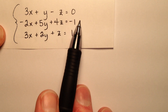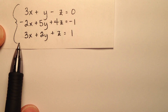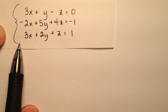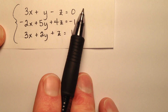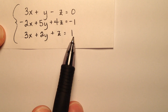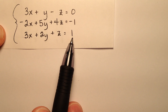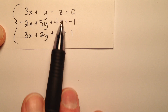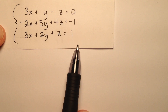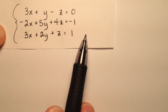Here I'm going to solve this system with three equations and three unknown values using Cramer's rule. The first thing I'm going to do is ensure that each of my equations is in standard form — x, y, z equals a number — and in fact they are.